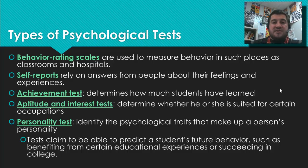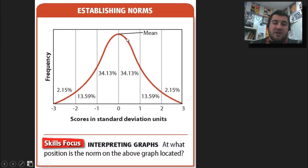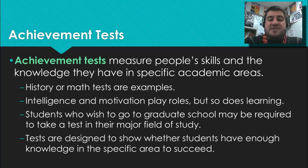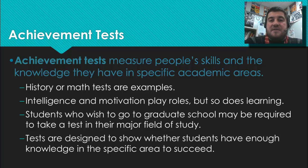Here's how we establish norms for a test: if the average is in the middle, we count the standard deviations — negative one, negative two, plus one, plus two — and the mean is the norm. Achievement tests are tests you take pretty much every day in school; they measure skills and knowledge already accrued in specific academic areas. History, math, and psychology are examples of achievement tests.